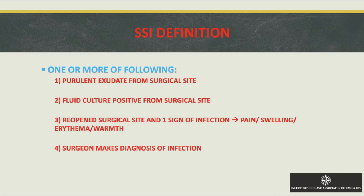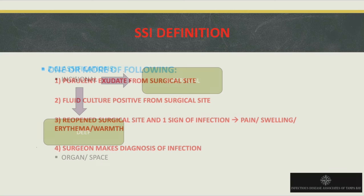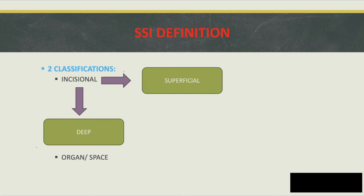How do you define them? It's usually one or more of the following: purulent exudate coming from the surgical site, a positive fluid culture from the surgical site, a dehisced wound from the surgery, or one sign of infection like pain, swelling, erythema, or warmth — or if a surgeon makes the diagnosis that it's infected.